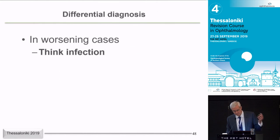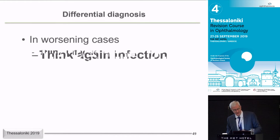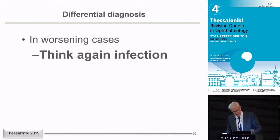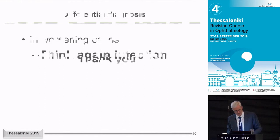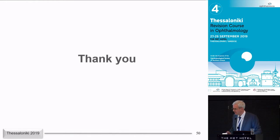To round up — how to avoid catastrophes: think of infection. Keep thinking of infection. Think again of infection. And then, if everything else isn't working, think of masquerade or neoplasia — primary intraocular lymphoma. I'll take questions at lunchtime.